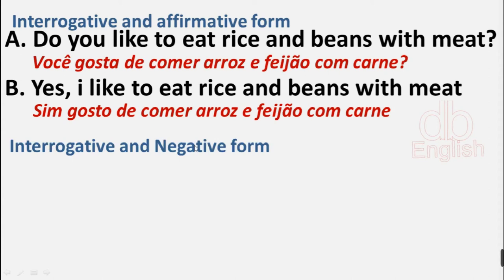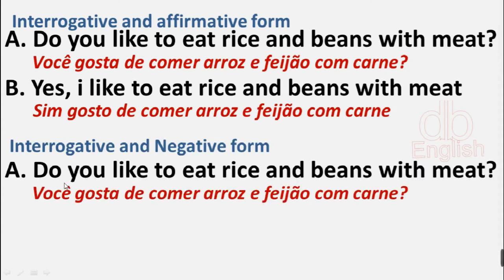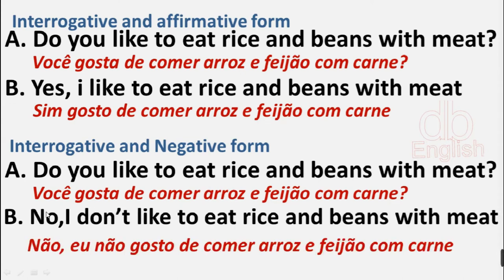Interrogative and negative form. A: Do you like to eat rice and beans with meat? B: No, I don't like to eat rice and beans with meat.